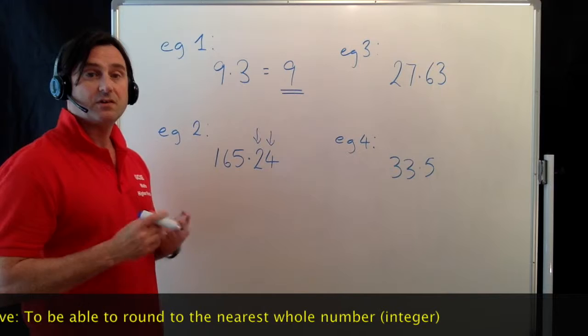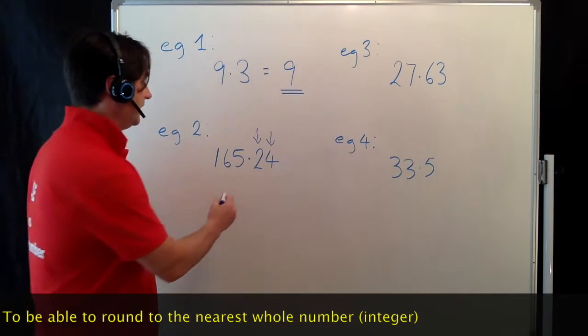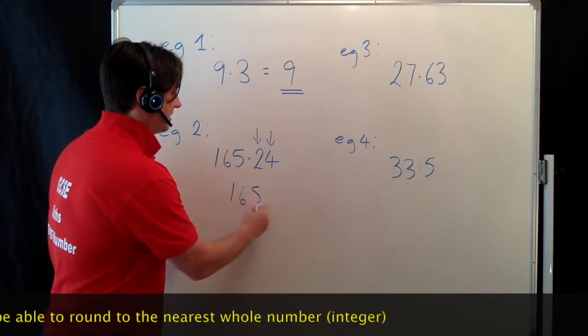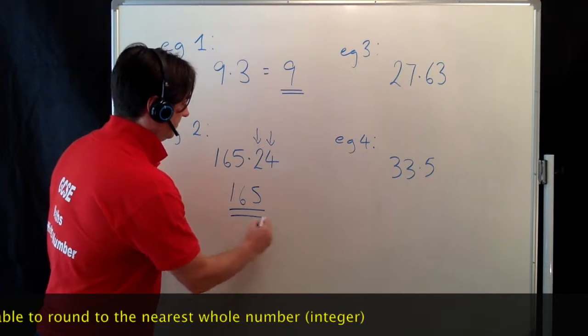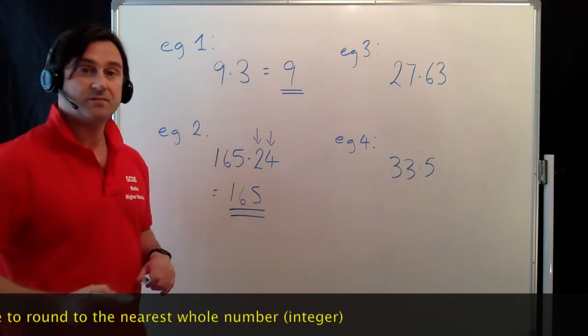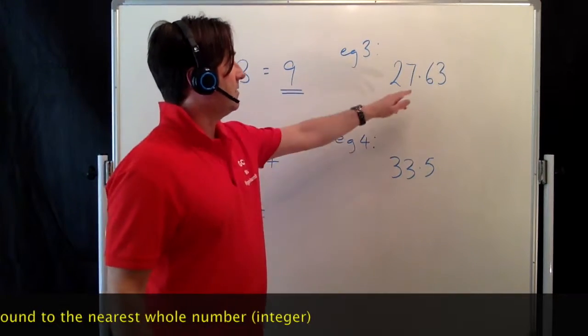This number stays as 165 to the nearest integer. Example 3: same thing again here. The 3 really doesn't come into it. All we need to look at is the number after the decimal point, the first number after the decimal point.